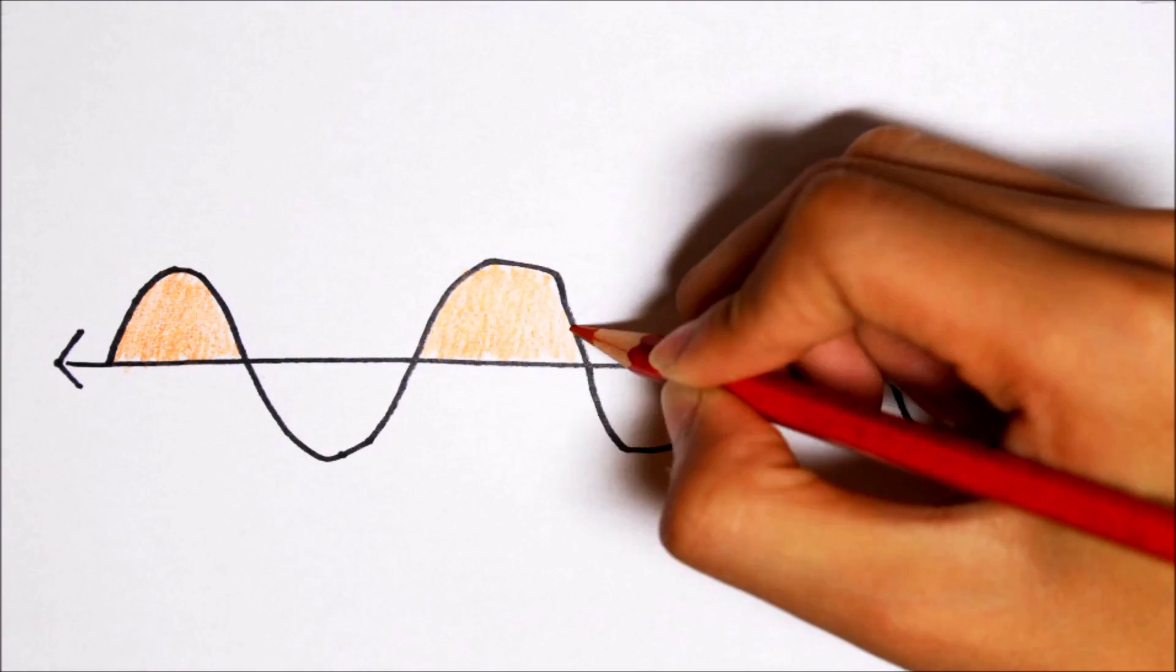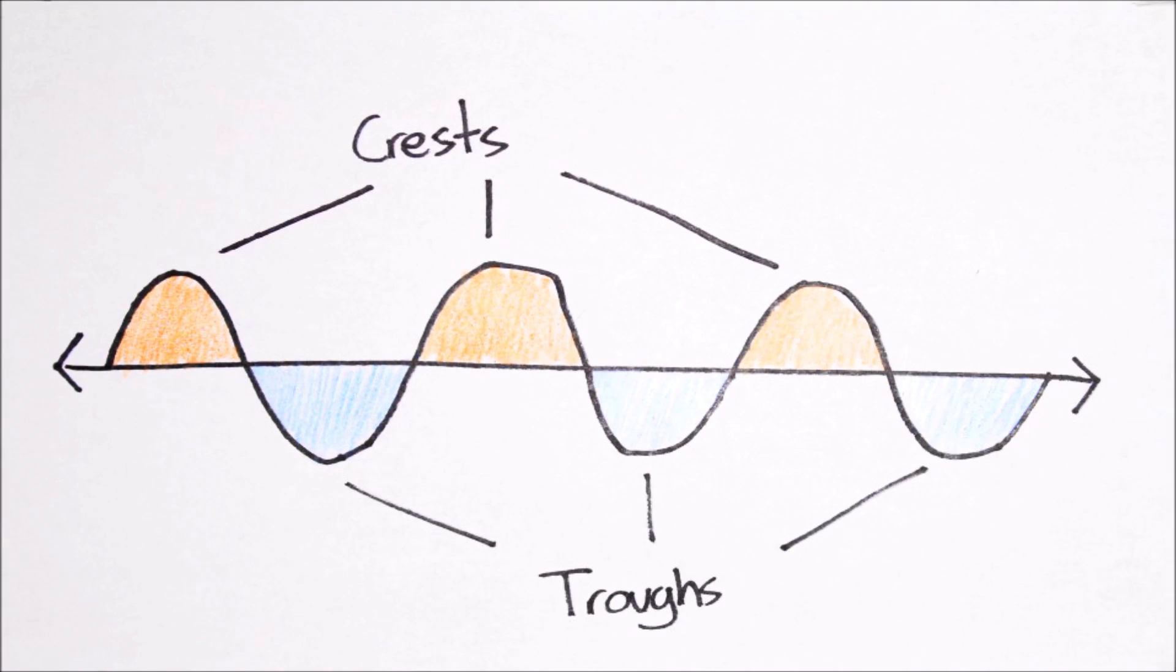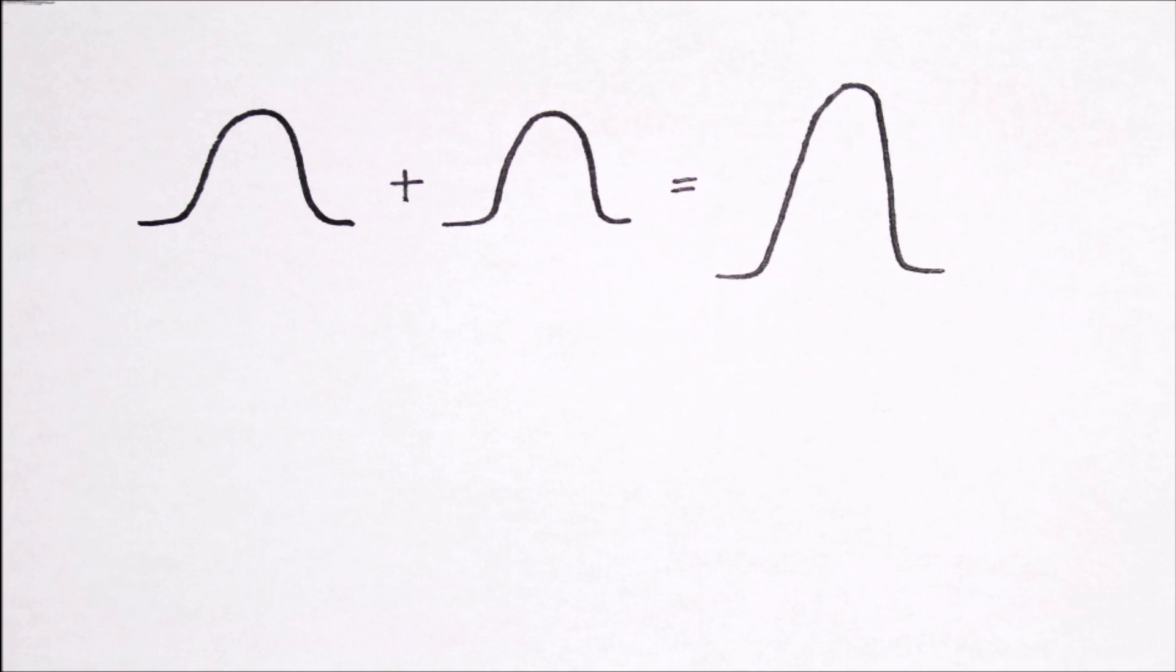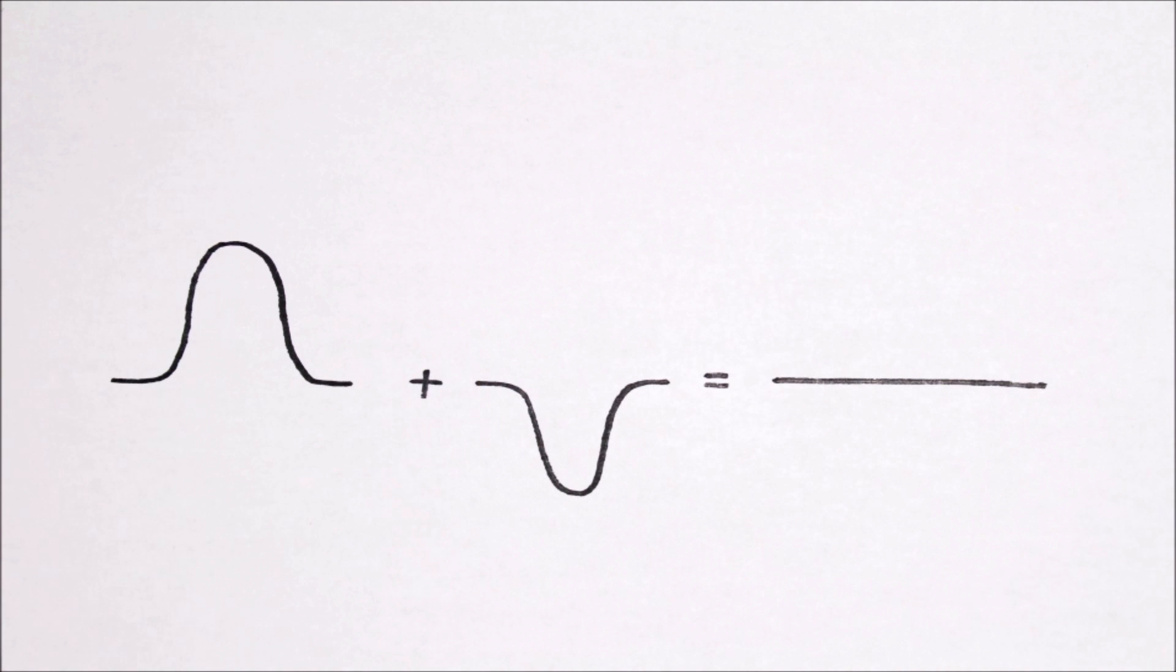If we have a wave like such, these parts here are called crests, and these are called troughs. If two crests meet, then together they form an even bigger crest. The same applies for a trough. A trough plus a trough equals a bigger trough. When a crest and a trough meet, as you would expect, they would cancel each other out, leaving nothing.